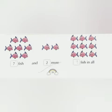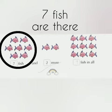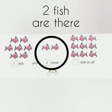Next, here also you have to count in each group how many pictures are there: 1, 2, 3, 4, 5, 6, 7. In this group 7 fish are there. 1, 2. In this group 2 fish are there.